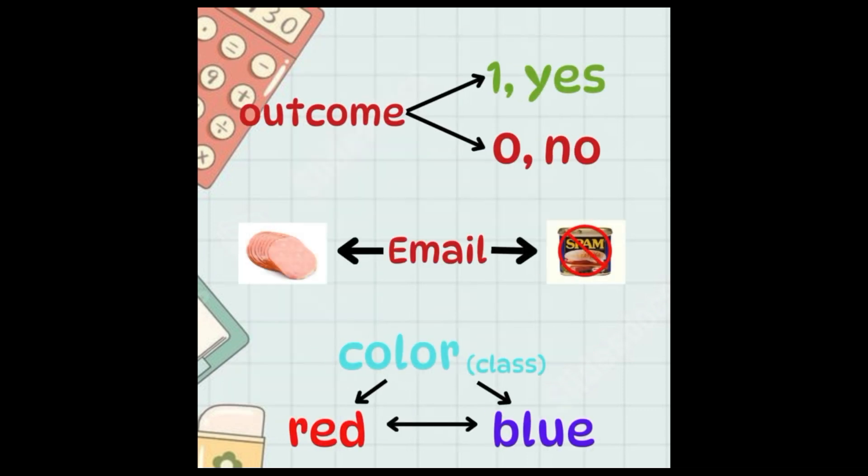If we consider binary logistic regression, which has two outcomes, 0 and 1, it's used in cases like predicting whether an email is ham or spam.